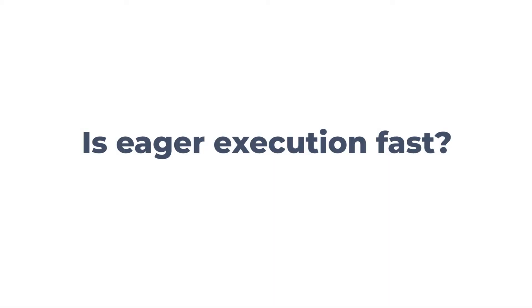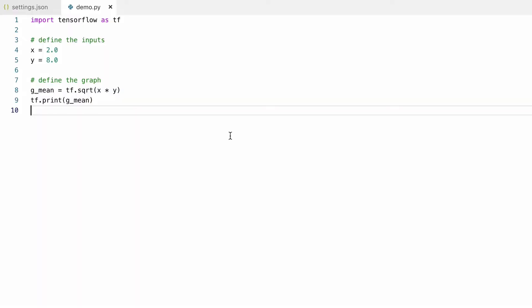Eager execution is convenient, but how about performance? Is it as fast as using sessions? In many cases, the answer is yes — it's almost as fast. You might notice a performance difference if your model has a lot of small operations though. But it doesn't really matter because it's now easier to switch between these modes. You can use eager execution for experimentation and debugging, and easily switch to graph execution mode once you are ready to train the model.